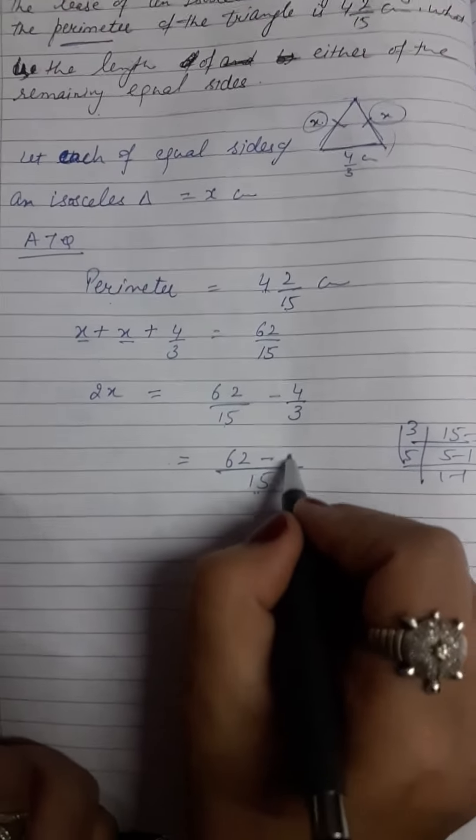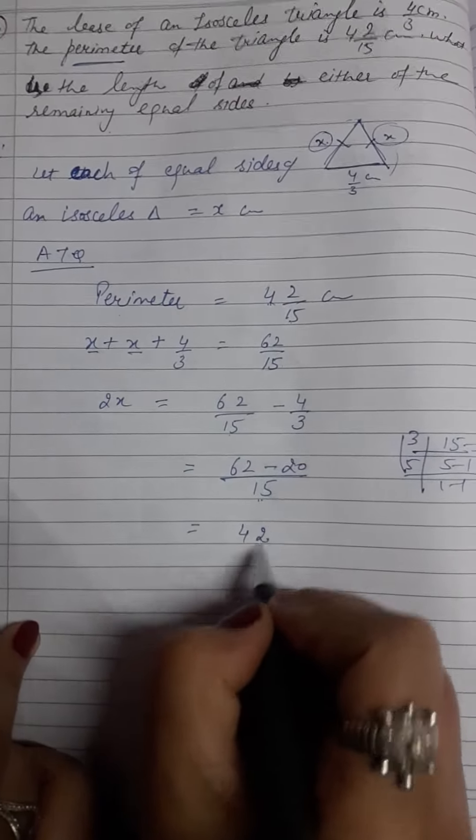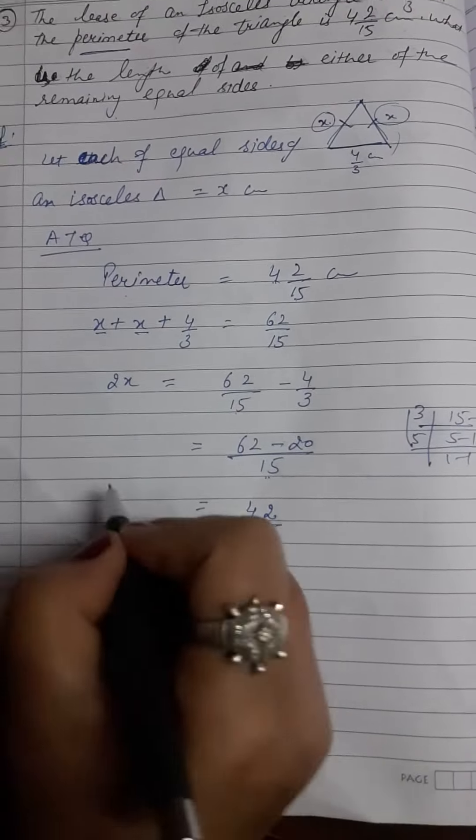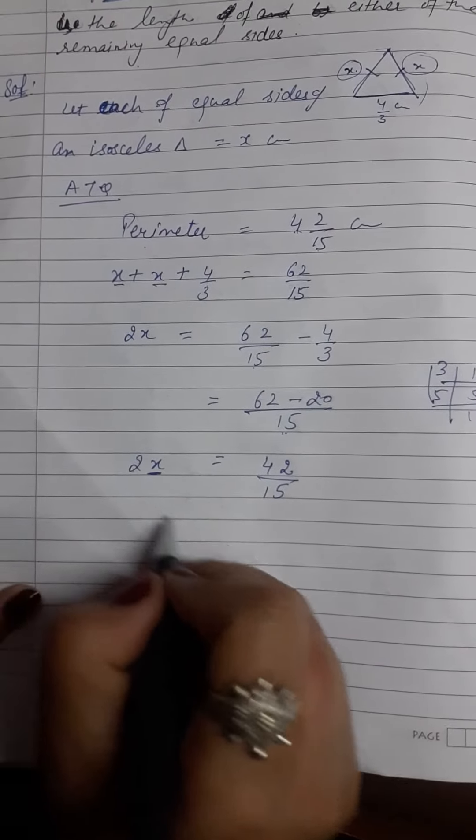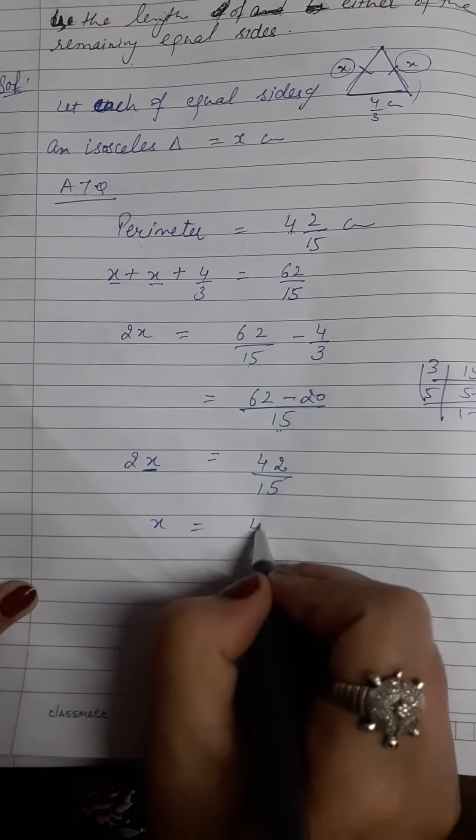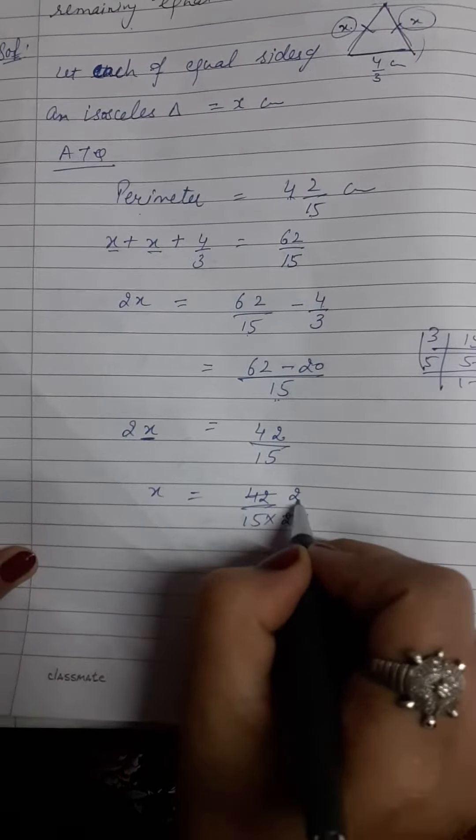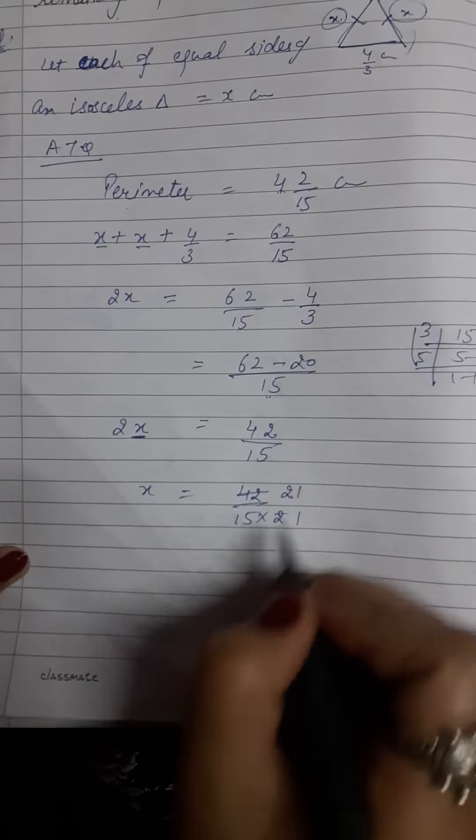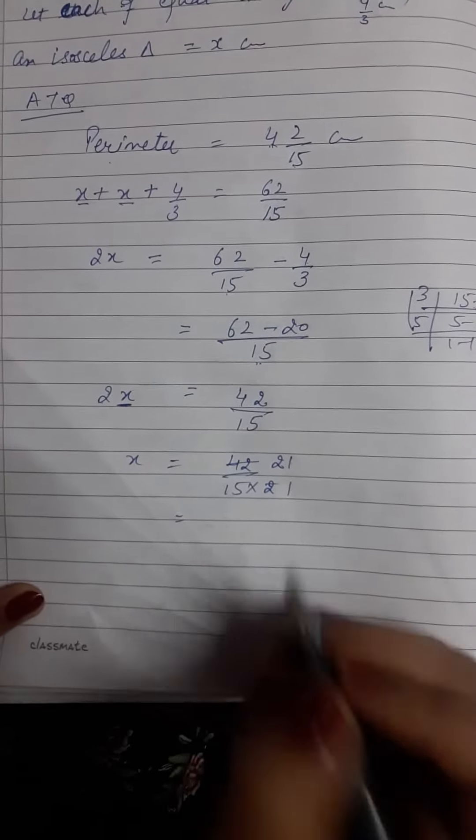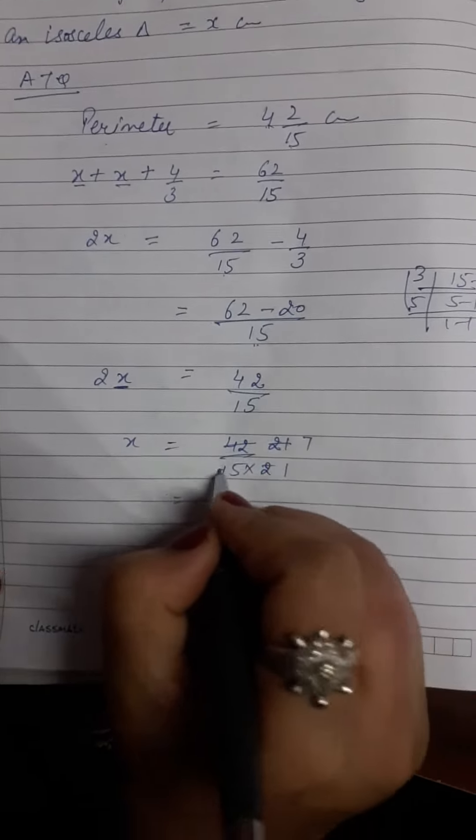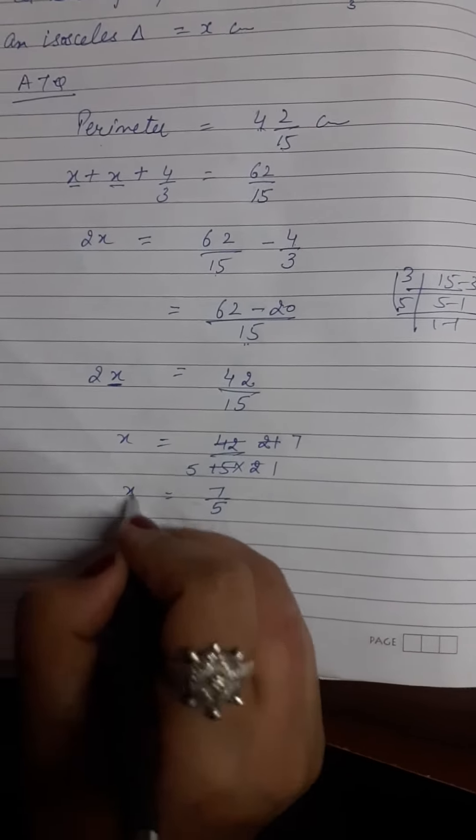5 times 4 is 20. 62 minus 20 that is 42 over 15. Now here is 2x. We have to find the value of x only, so we take 2 to the right hand side. It becomes division. So 2 divides into 42, that is 21 by 15. These are also divisible by 3. 3 times 7 is 21, 3 times 5 is 15. So our side is 7 by 5. This is in improper fraction.